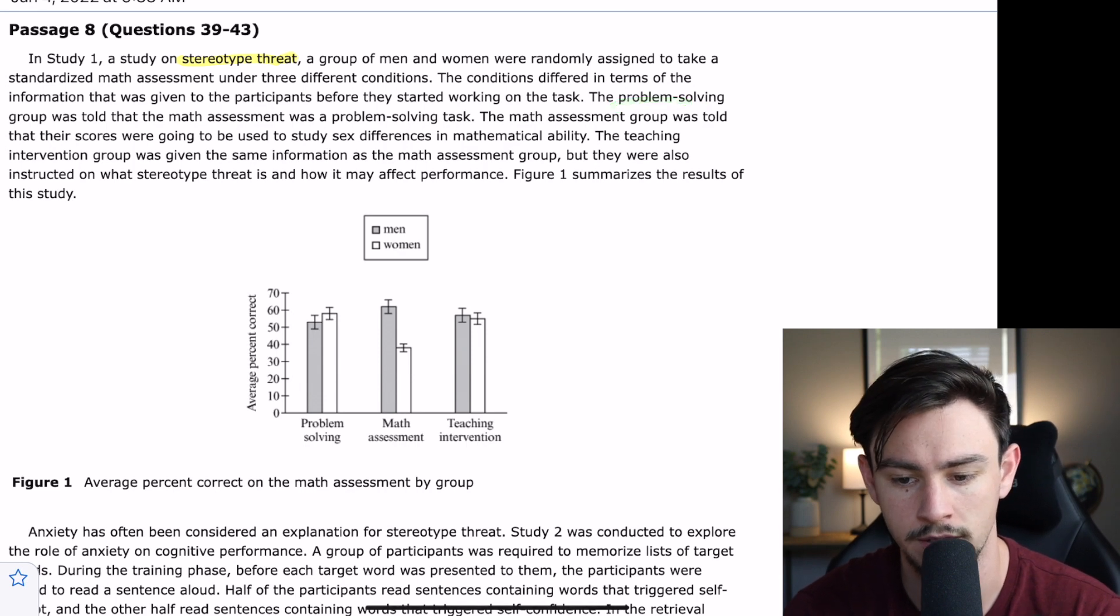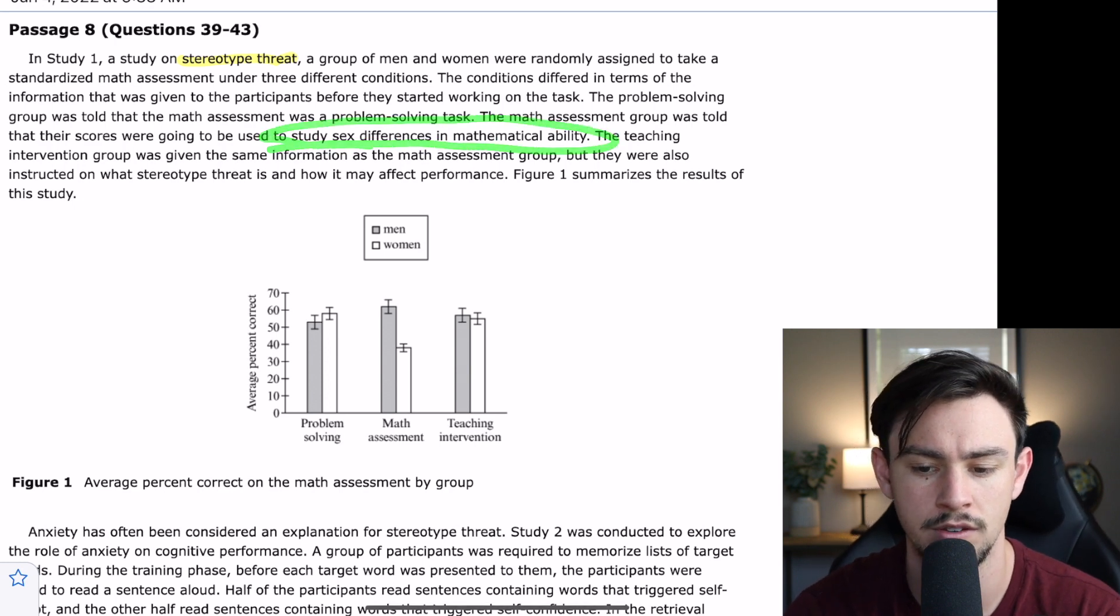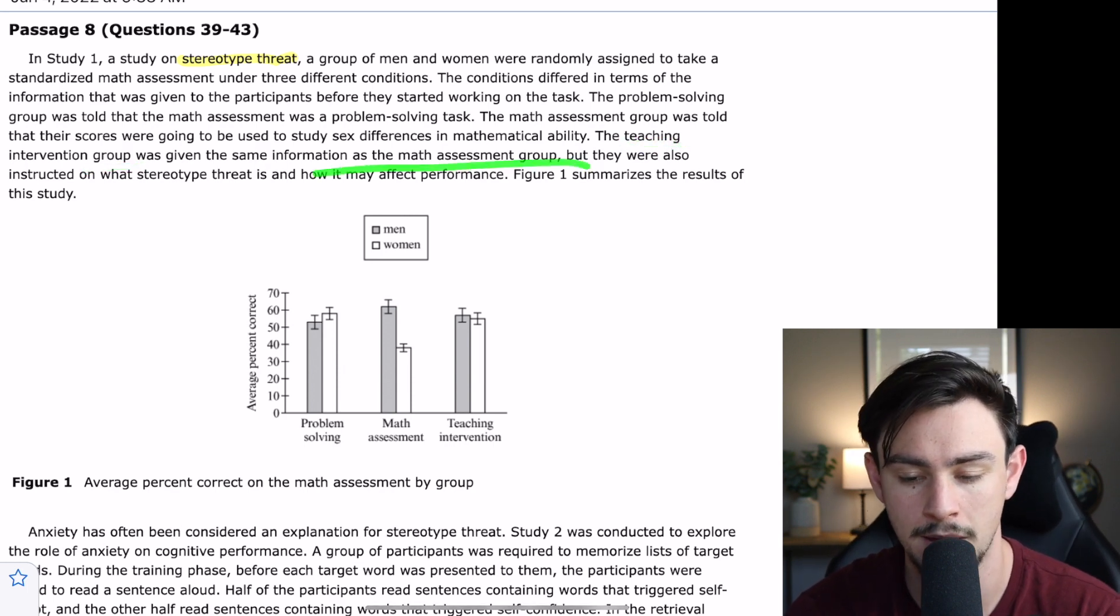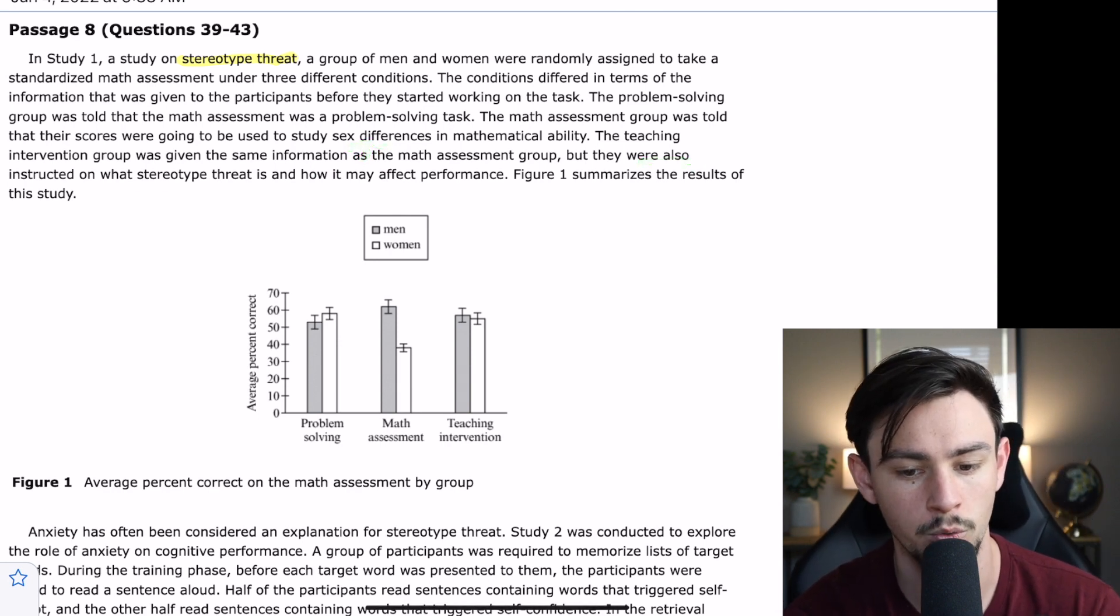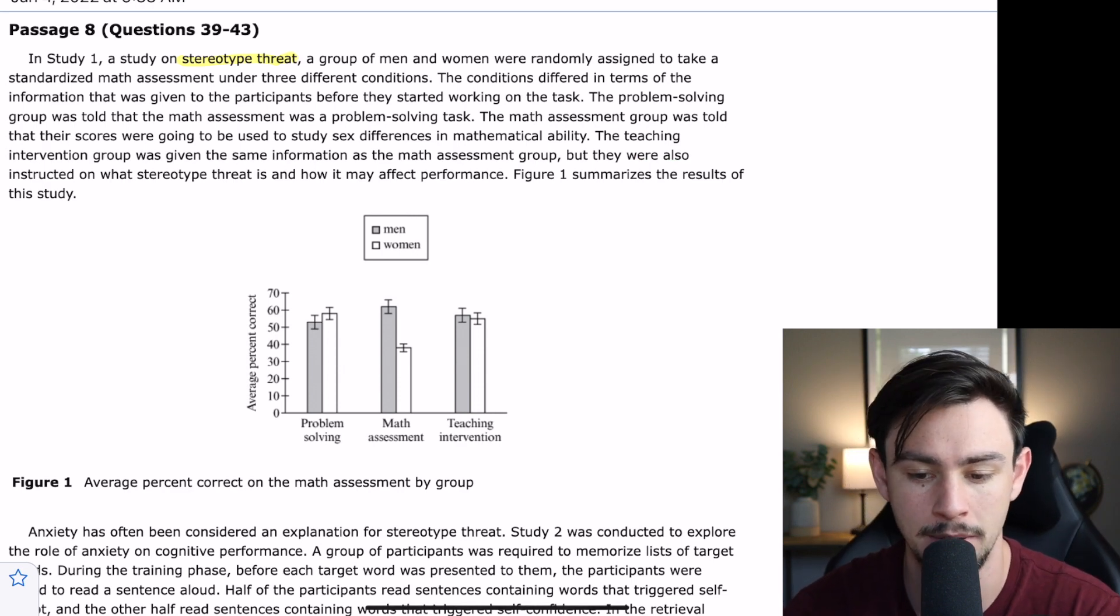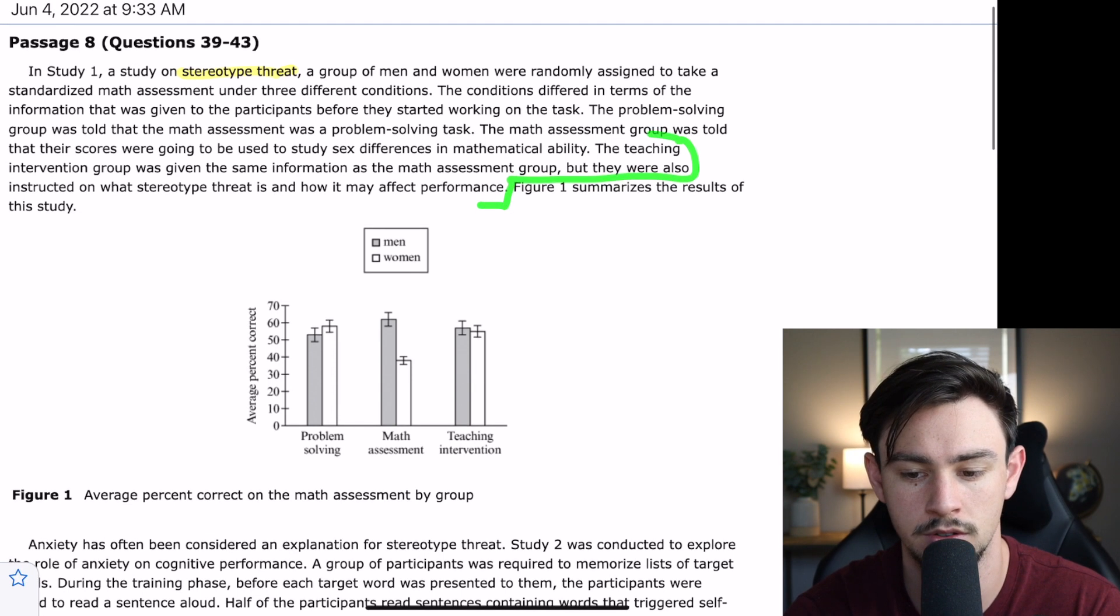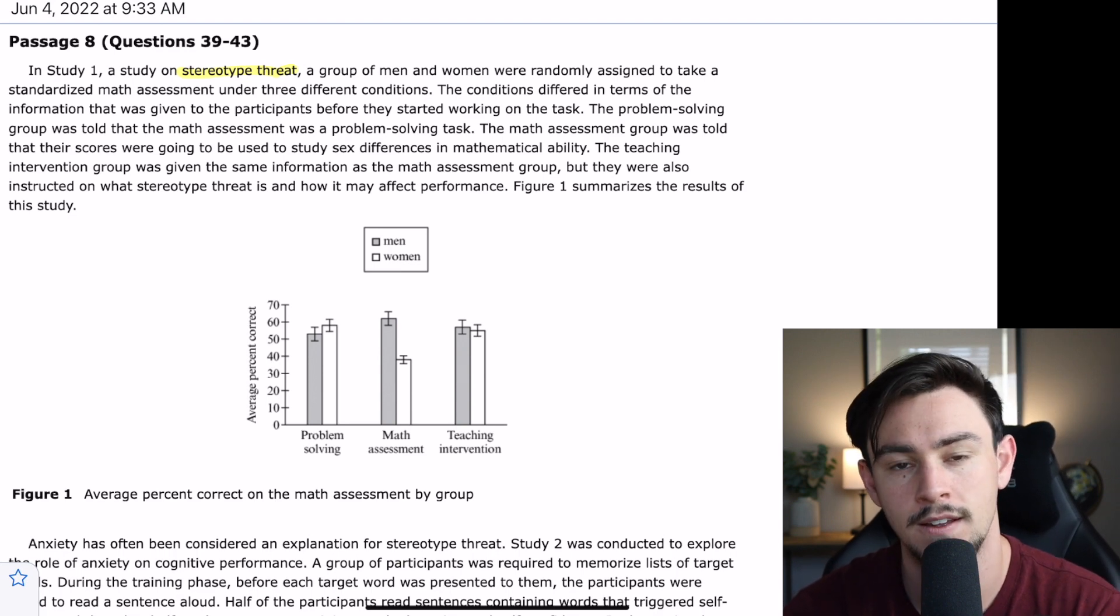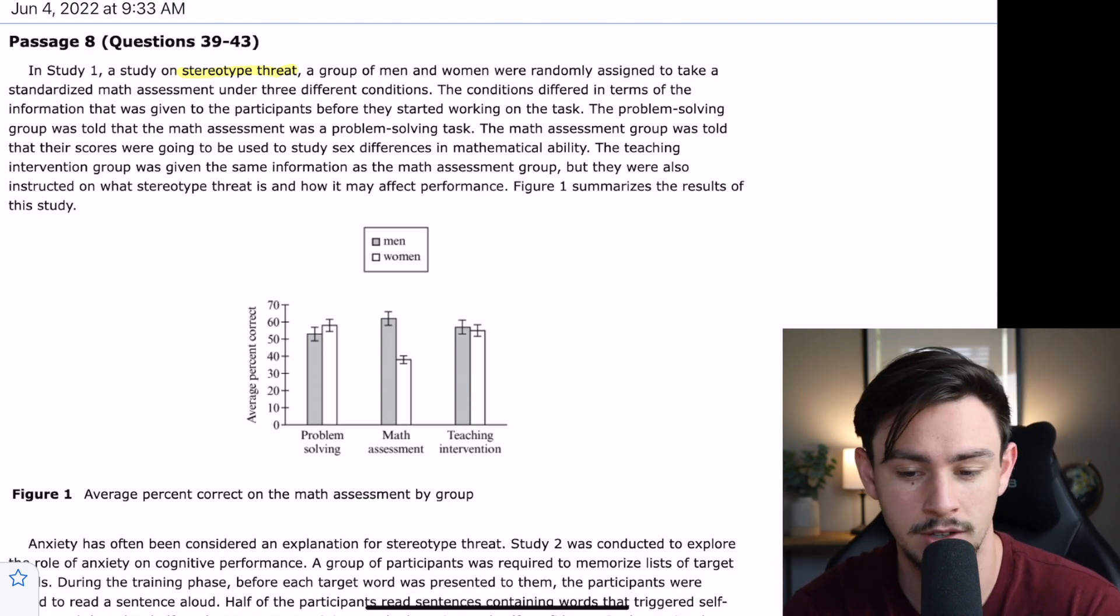The conditions differed in terms of the information that was given to the participants before they started working on the task. Problem-solving group was told that the math assessment was a problem-solving task. The math assessment group was told that their scores were going to be used to study sex differences in mathematical ability. Well, that's weird, right? So, we have three groups taking the same math test. And I guess what they're doing differently is telling them what the goal of this is. The first one says, We're problem-solving. The second one says, We're looking at different sex's differences in mathematical abilities. And then the third one is a teaching intervention group where you give the same information as a math assessment group. So, you make them aware of sex differences in mathematical ability. But they're also told what stereotype threat is and how it can impact performance.